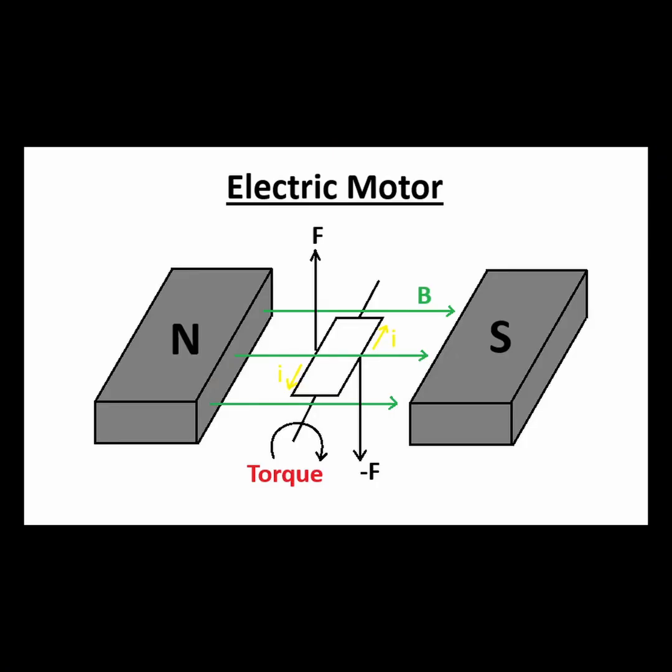For example, we can create a magnetic field using two permanent magnets. A current carrying wire in the form of a loop is placed within the magnetic field. A force is produced on the wire perpendicular to the wire and the magnetic field.